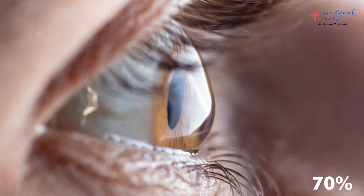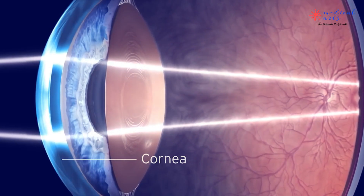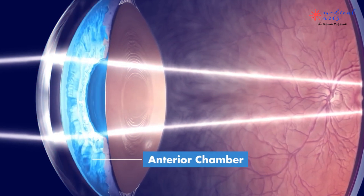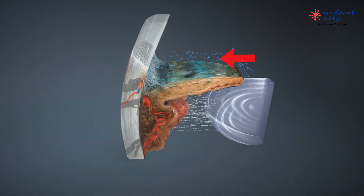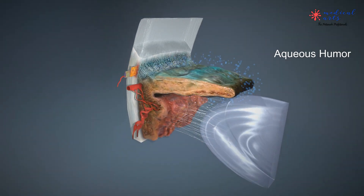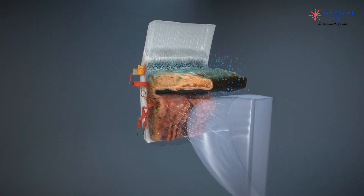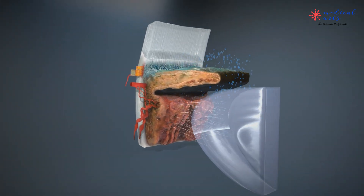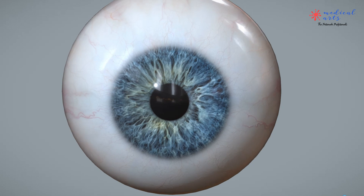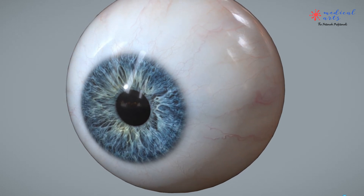Behind the cornea is a fluid-filled space called the anterior chamber. The fluid inside the anterior chamber is called aqueous humor, which helps in maintaining constant eye pressure. The cornea and sclera also act as a barrier against dirt, germs, and other substances that can harm the eye.